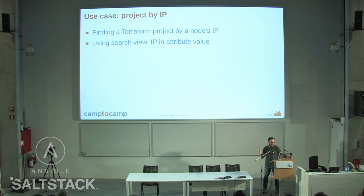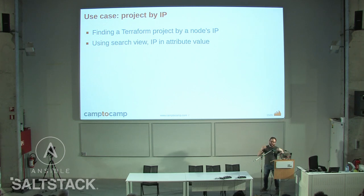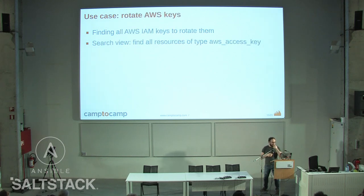Here are a few real use cases of TerraBoard. Finding a project by IP: I've got a machine with this IP and no idea where it was declared — just put the IP in the search view with the attribute value and it will tell you where it appears. Another case: rotating AWS keys — find all the AWS keys in the account using TerraBoard, find which projects they were declared in, so you can taint the resources and force them to be renewed. Another case: when did a parameter change? Go into a project, do a diff between states and see when that parameter changed and which other parameters changed at the same time — useful for debugging.